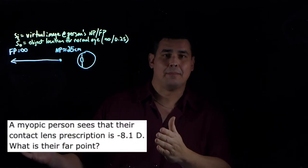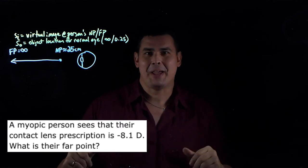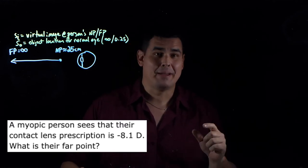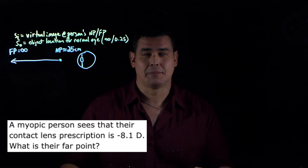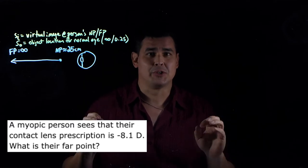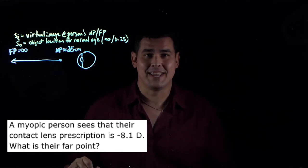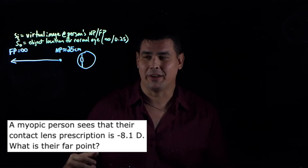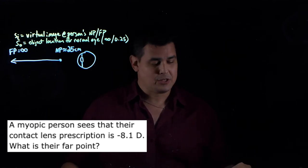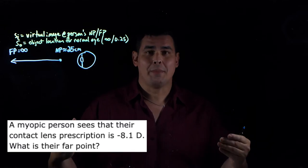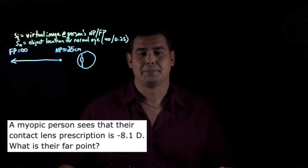Here's the second problem — this is actually me. I am the myopic person in this problem. My prescription for contacts before I had laser surgery — best money I ever spent — was negative 8.1 in my worst eye, and about negative 8 in the other. The question is: what is my far point if my prescription is negative 8.1?